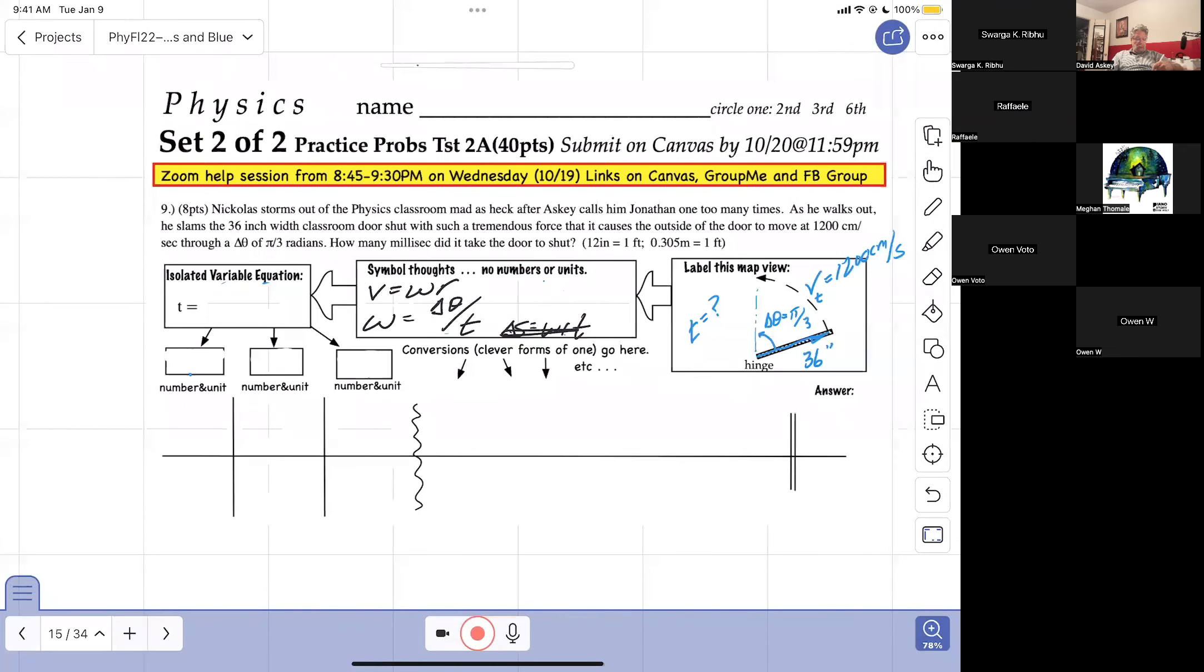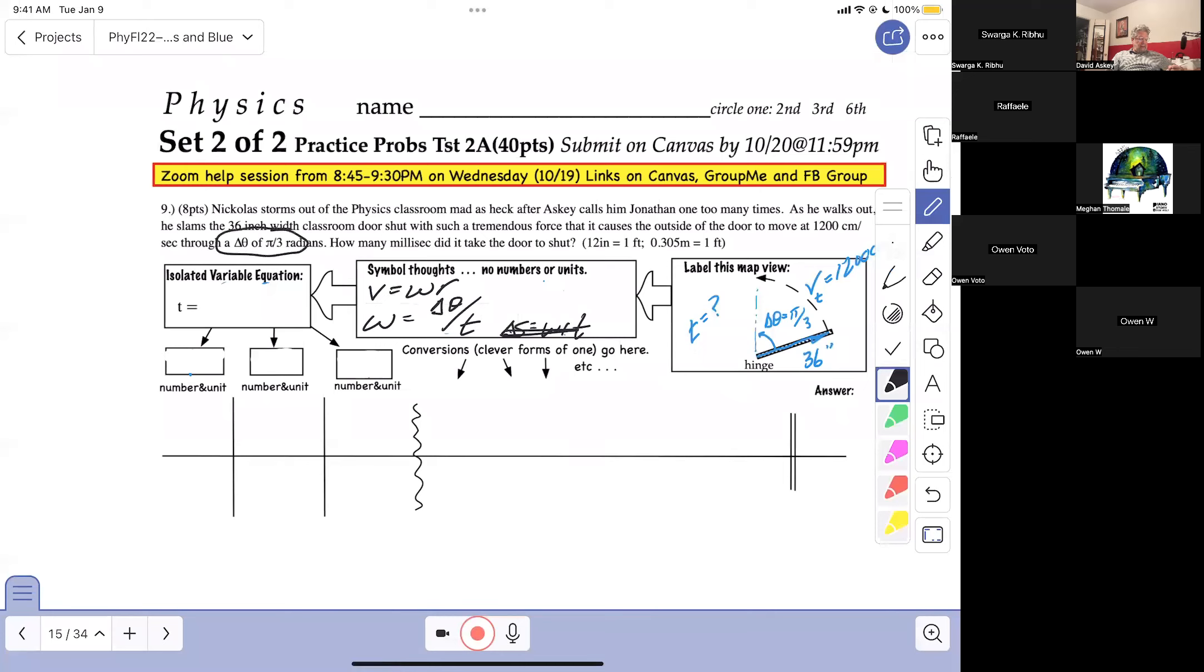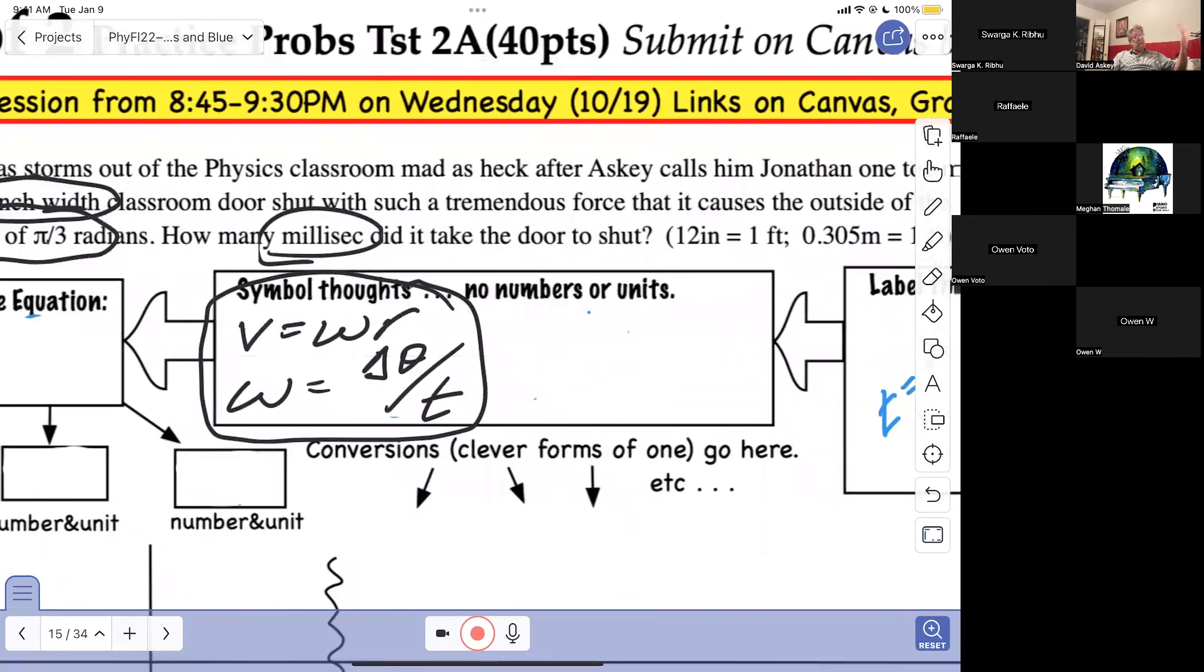So what I'm going to do is for symbol thoughts, I'm just going to write down V is equal to omega R. I'm just going to write down some formulas that I know. Omega equals delta theta over T. These are your symbol thoughts. I want to see you think. That's my job is to watch you think. And so I know where you're having your issues.